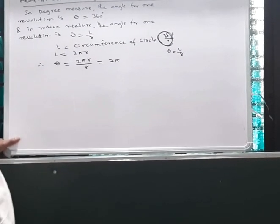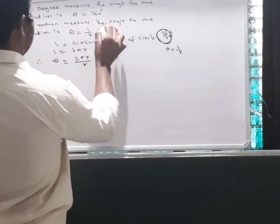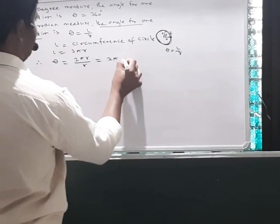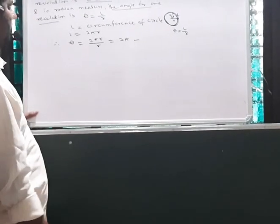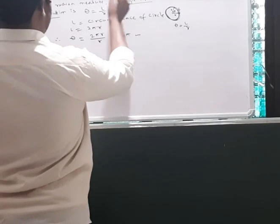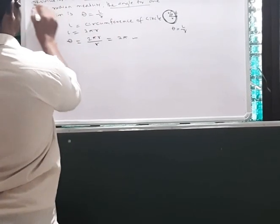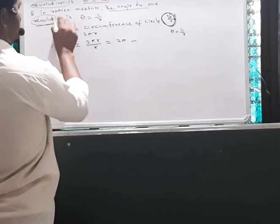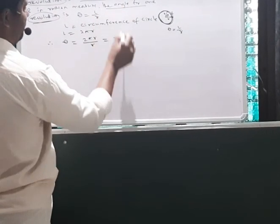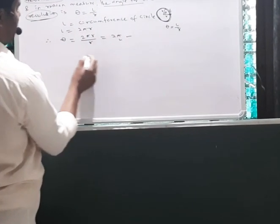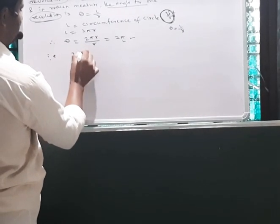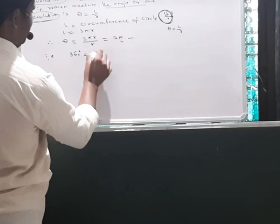So in radian measure, the angle for one revolution is 2π radians, and in degree measure it is 360 degrees. The amount of rotation is the same — one revolution. Therefore 360 degrees equals 2π radians.